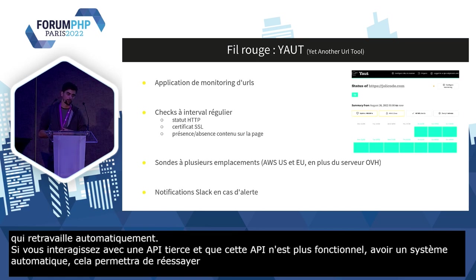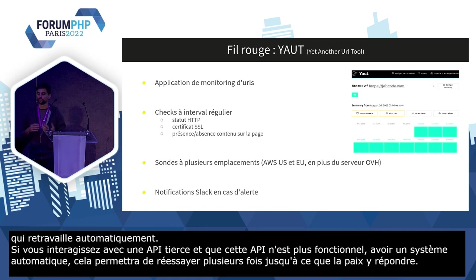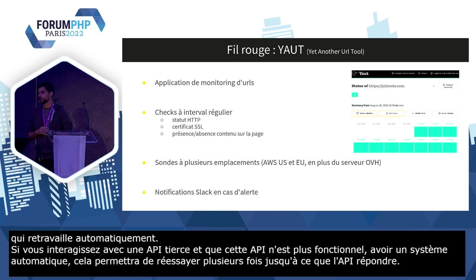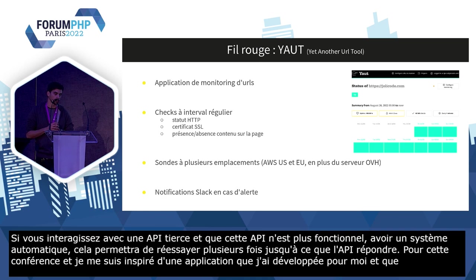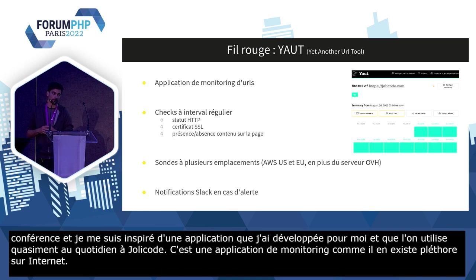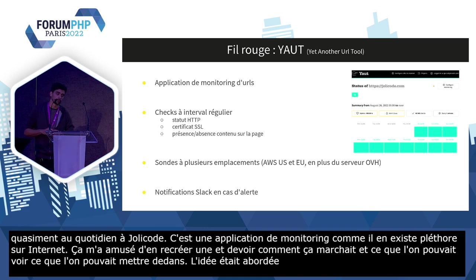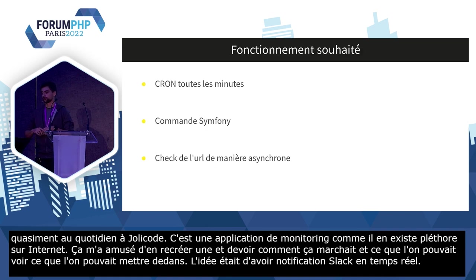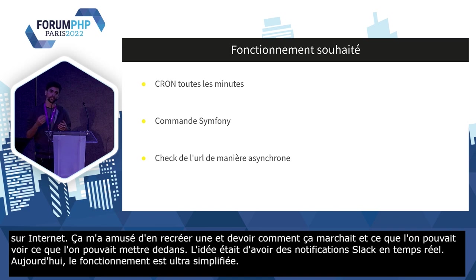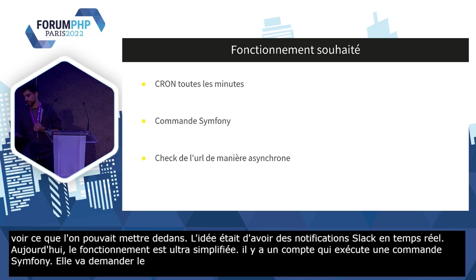Pour cette conf, je me suis inspiré d'une application que j'ai développée à la base pour moi, mais qu'on utilise quasiment au quotidien chez Jolly Code : c'est une application de monitoring d'URL. L'idée principale, c'est d'avoir des notifications Slack en temps réel dès qu'il y a un souci sur une de nos URLs, que ce soient des projets clients, internes ou persos. On va avoir un cron qui tourne toutes les minutes, exécute une commande Symfony, et cette commande demande le check d'une URL de manière asynchrone.